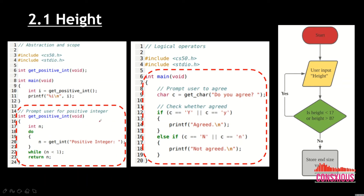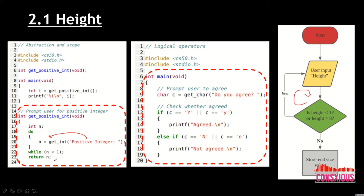From the CS50 examples, we can reference how to convert the flowchart into code. We'll use a do-while loop, declaring integer n. The program prompts for a positive integer, stores it in n, then checks whether it's within the loop condition or breaks out. We use the OR operator — expressed with the symbol — to combine the two conditions, and that's how we form the height validation code.